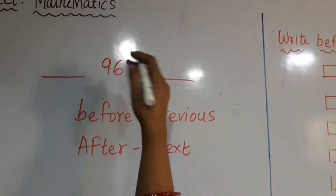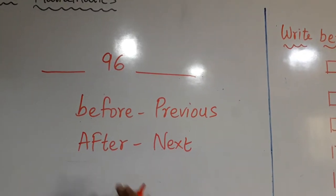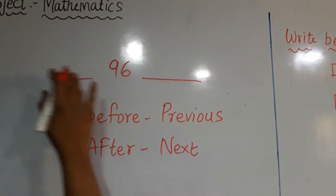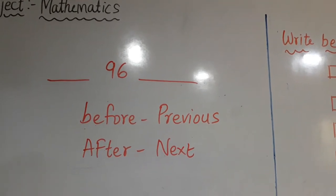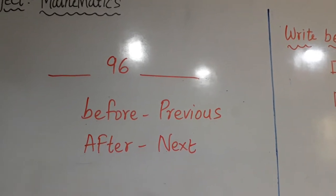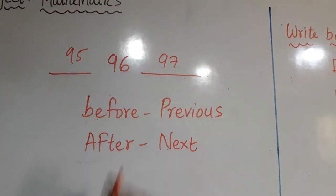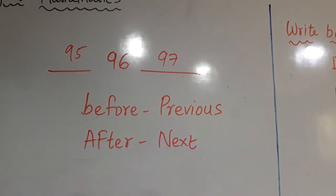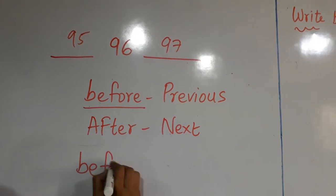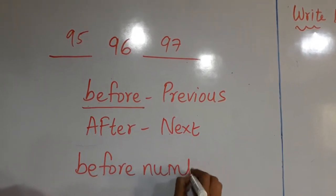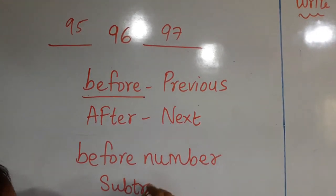After 96, which will be the next number? It is simple — if you know the numbers you can write directly: before 96 is 95 and after 96 is 97. But if you don't know the numbers, for the before number you have to subtract 1.